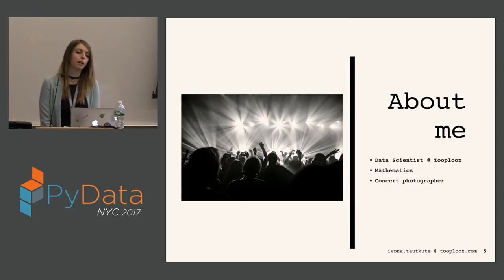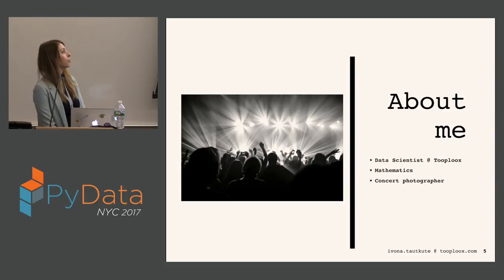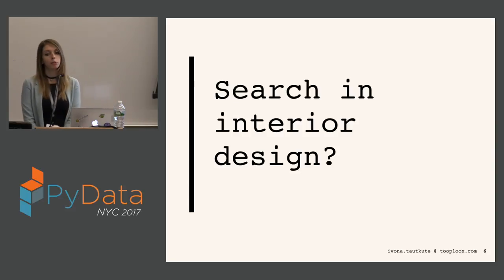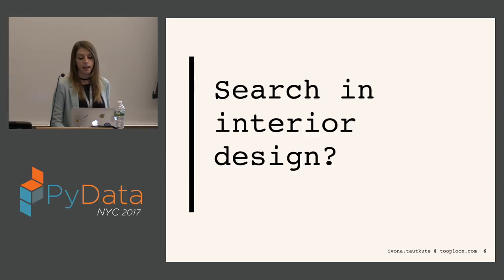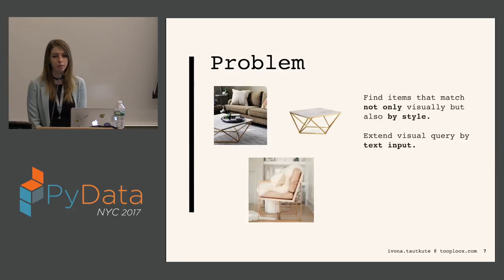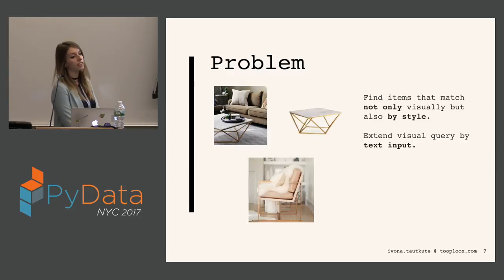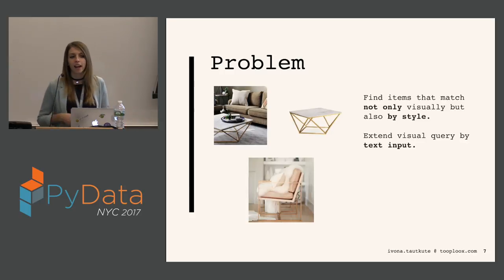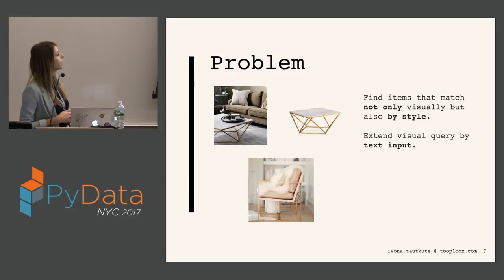In my free time I work as a concert photographer, and those two things — mathematics and photography — led me to computer vision and machine learning. So first of all, how do we perform search in interior design and what is the problem here? I don't usually buy stylish designer furniture, and even if I did, I would have no idea what other furniture to pair with it — any tables, sofas, or how to design my room so everything looks nice and stylish.